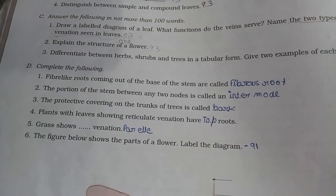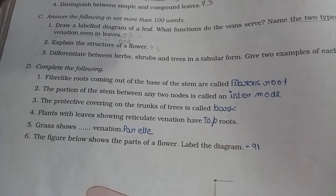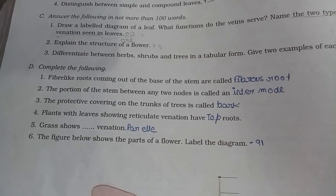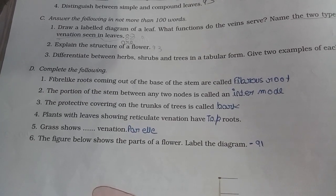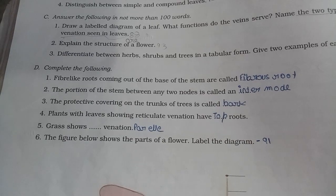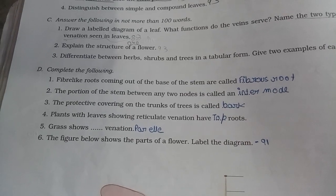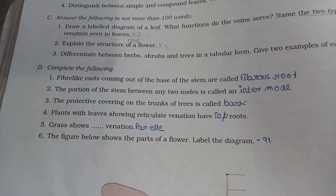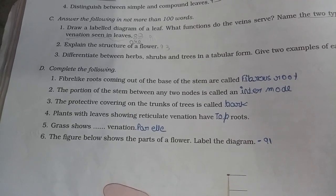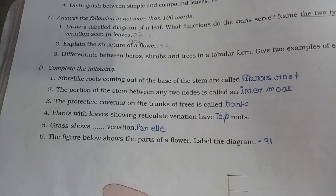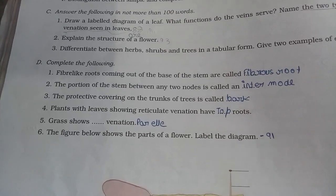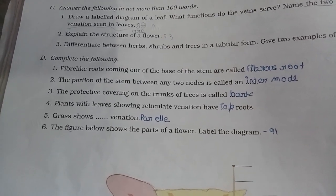Chapter 9: About Flowering Plants. Fibre-like roots coming out from the base of the stem are fibrous roots. The portion of the stem between any two nodes is called an internode. The protective covering on the trunk of a tree is called bark. Plants with reticulate venation have net-like leaf veins; those with parallel venation have parallel veins.